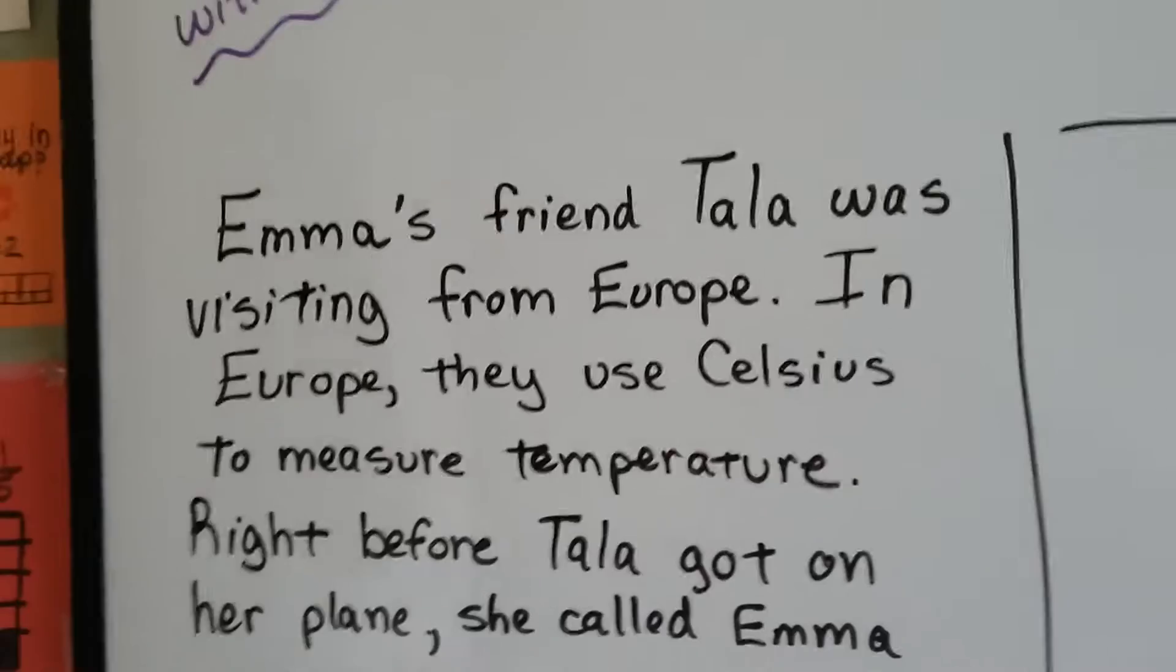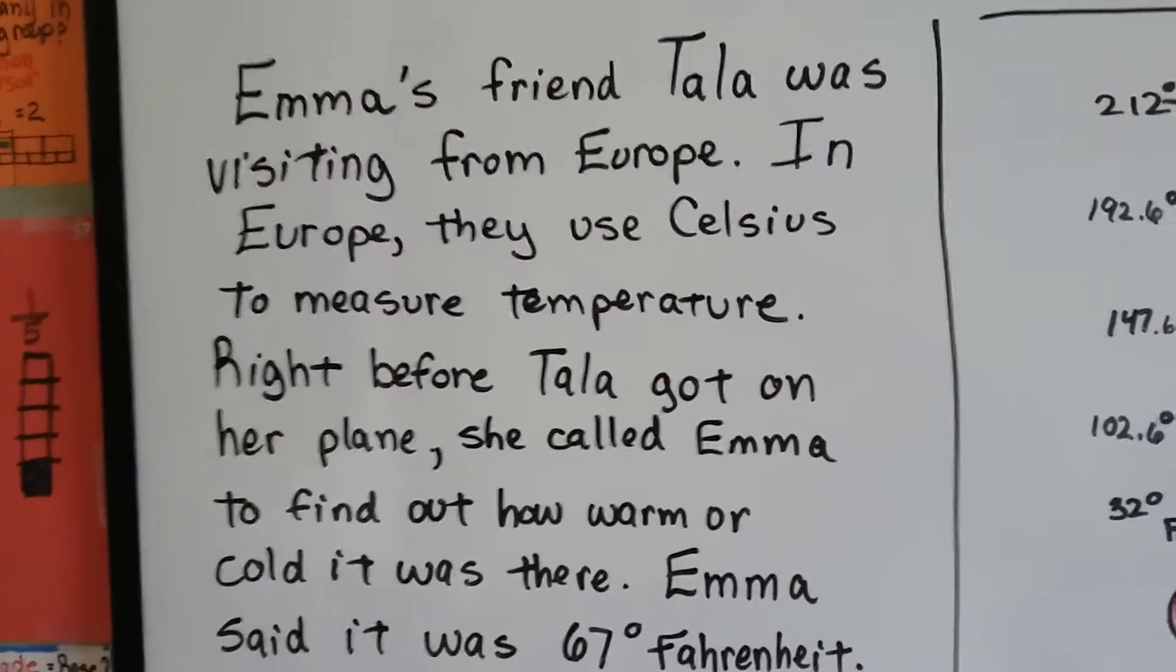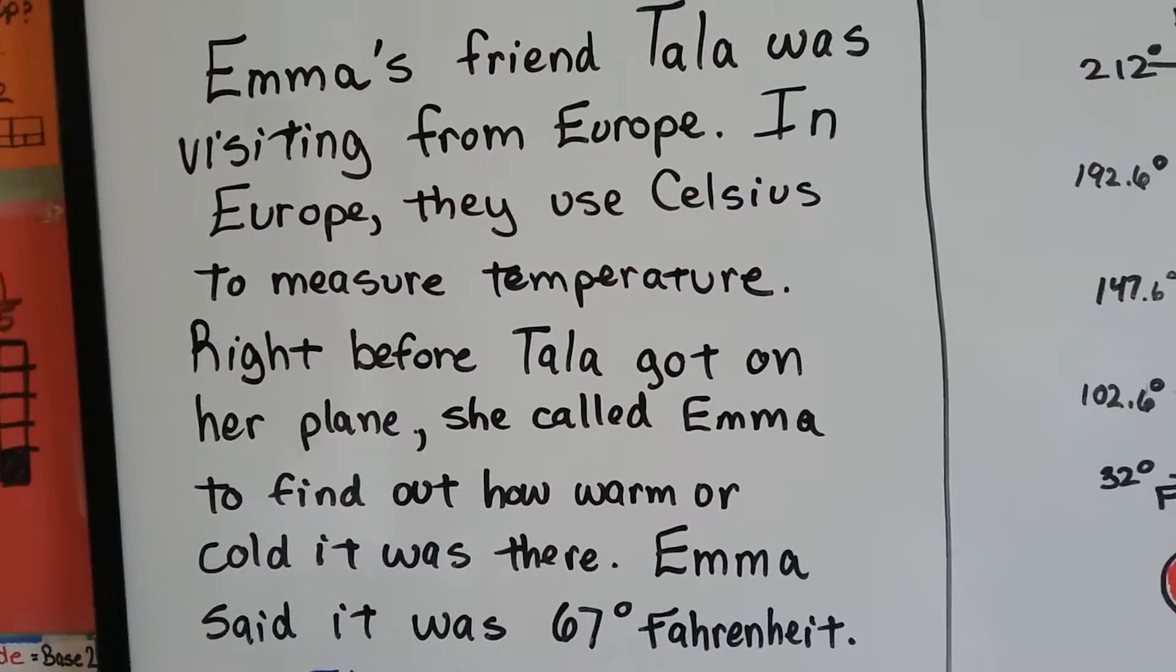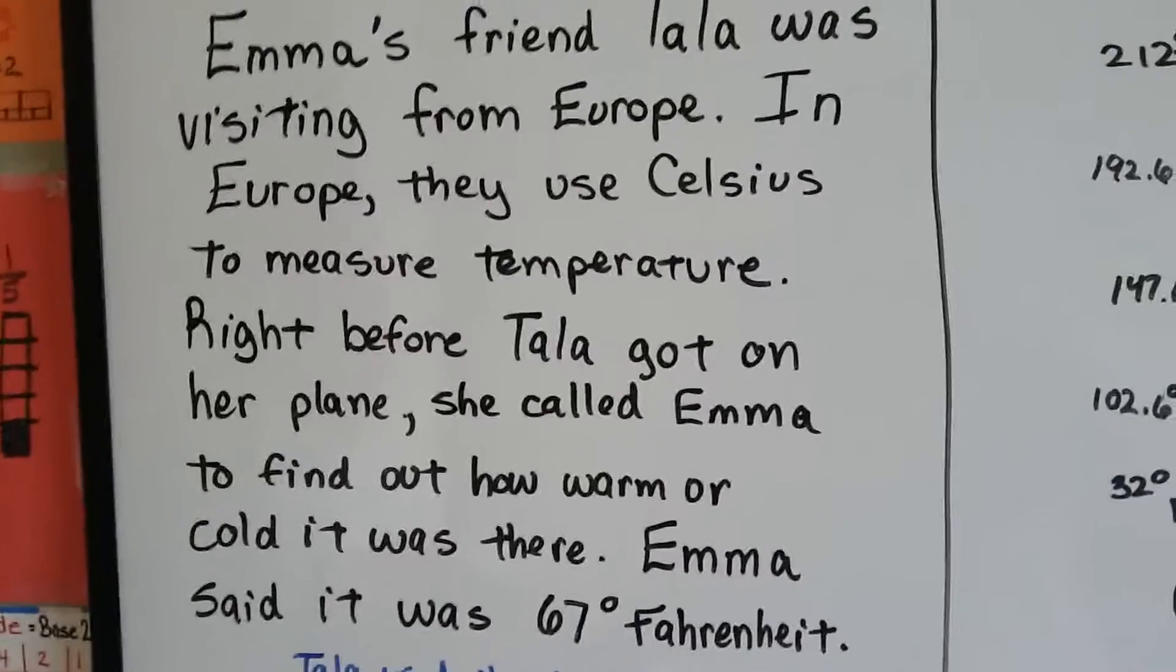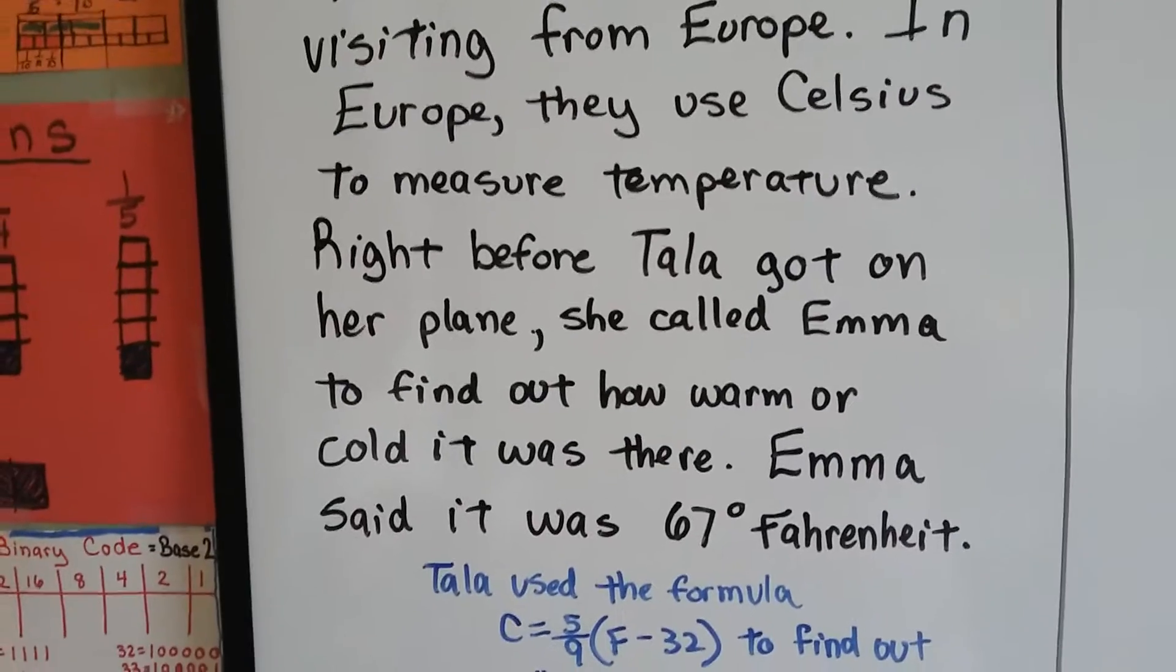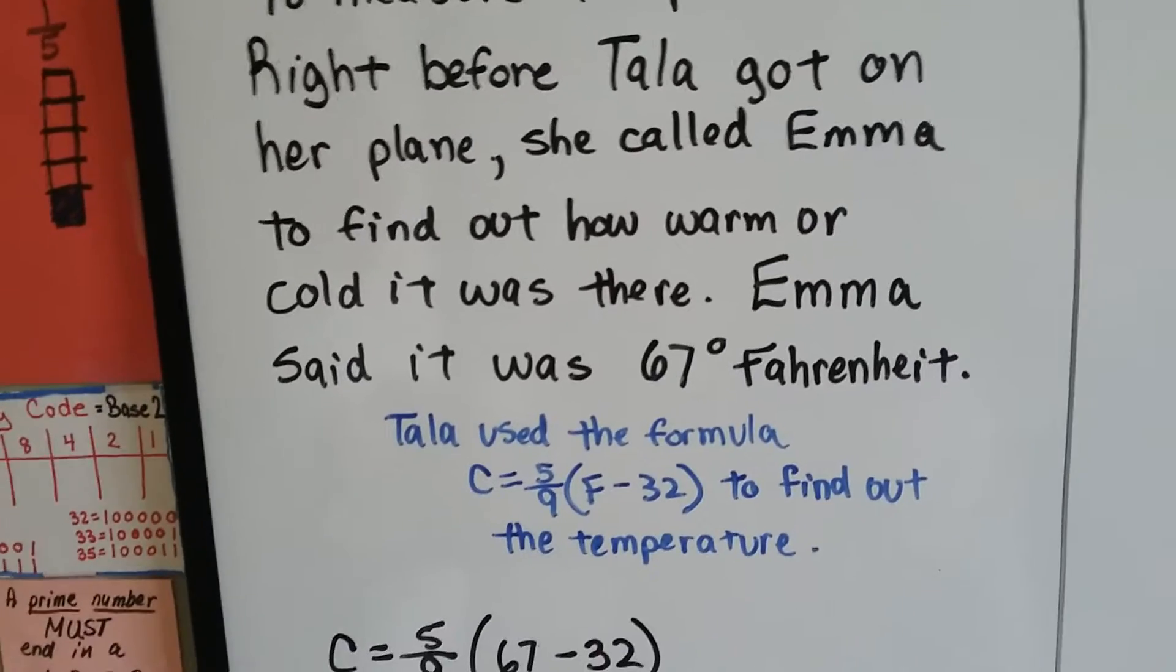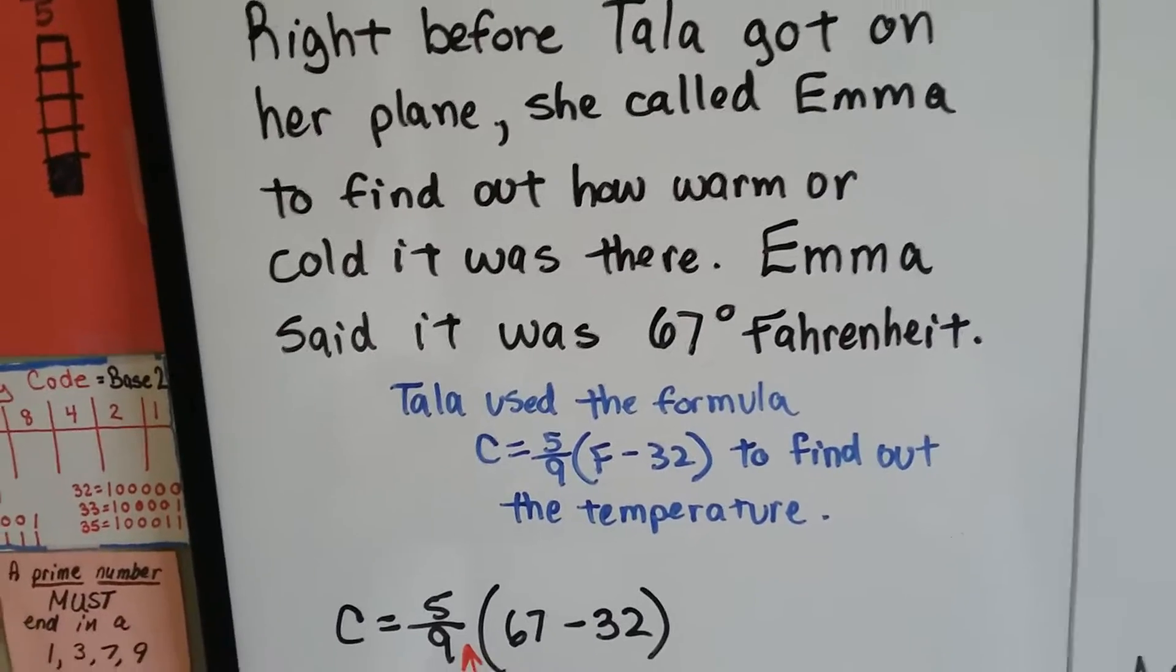Emma's friend Tala was visiting from Europe, and in Europe they use Celsius. All over the world they use Celsius. It's pretty much just the US that uses Fahrenheit and a couple other countries. Right before Tala got on her plane, she called Emma to find out how warm or cold it was here. Emma said it was 67 degrees Fahrenheit.